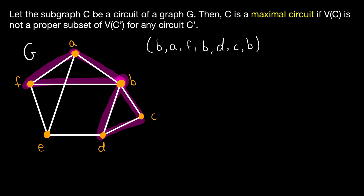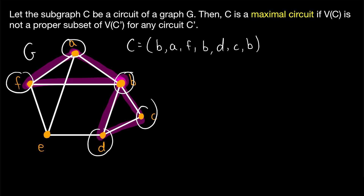Now our definition of maximal circuit: let the subgraph C be a circuit of a graph G. Then C is a maximal circuit if V(C), the vertex set of the circuit, is not a proper subset of the vertex set of any other circuit. This is very similar to other definitions of maximal objects in graph theory. The idea is that there doesn't exist another circuit containing all of C's vertices and additional vertices — C is maximal if there's no circuit that has all of C's vertices and more.